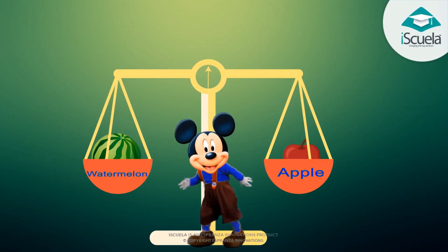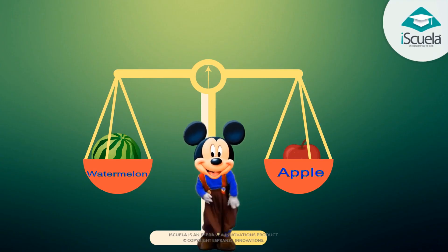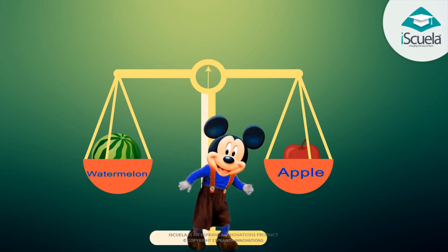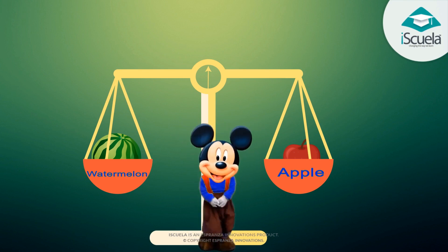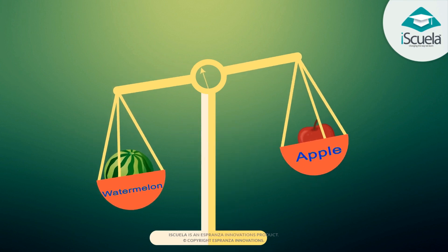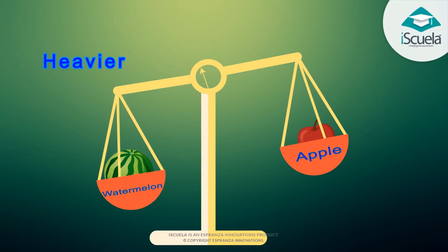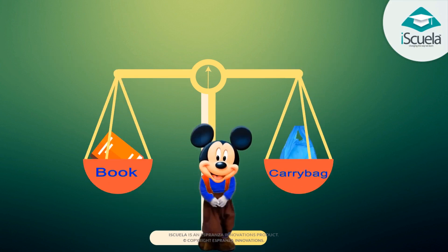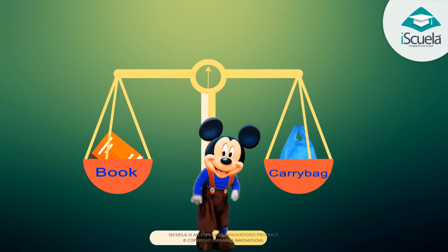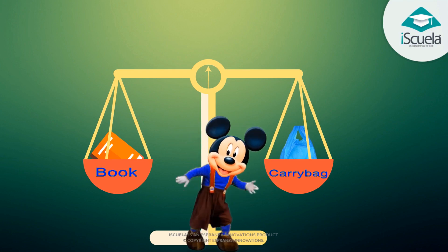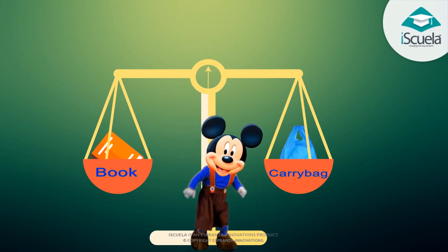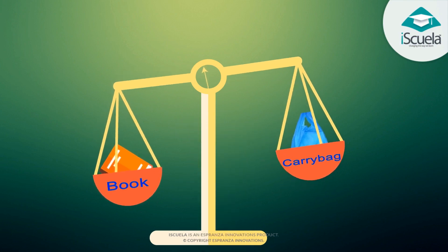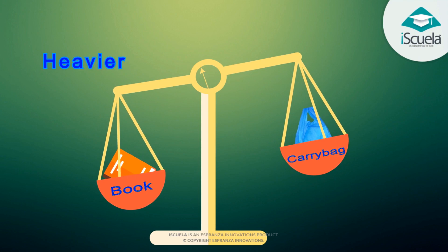Which is heavier? Which is lighter? Look and tell. Watermelon is heavier. Apple is lighter. Which is heavier? Which is lighter? Look and tell. Book is heavier. Carry bag is lighter.